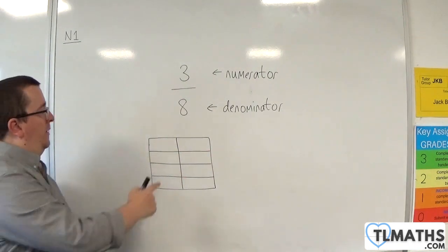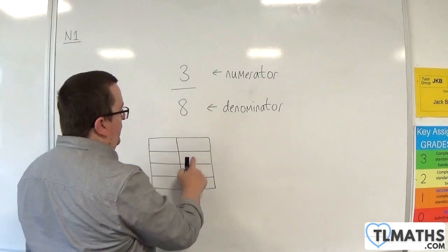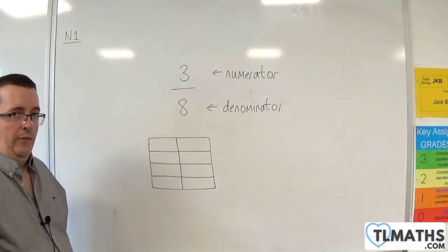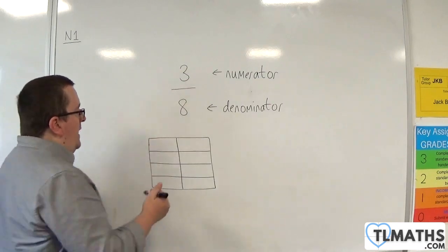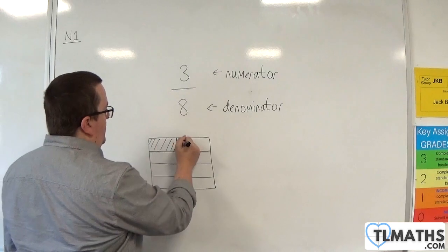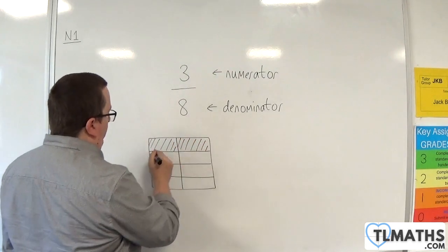Now I've got eighths, because I have 1, 2, 3, 4, 5, 6, 7, 8 identical pieces, or what I've attempted to be identical pieces. So, 3 eighths represents 3 of those eighths.